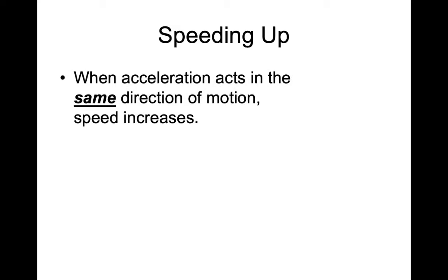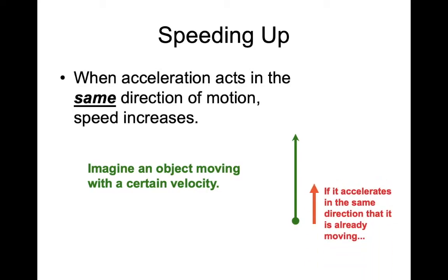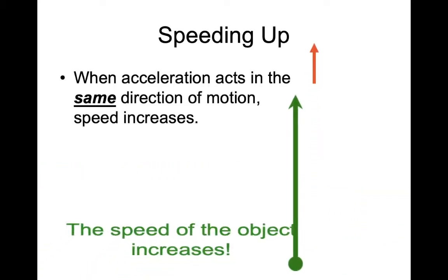So let's take a minute to consider what happens when an object speeds up. When acceleration is acting in the same direction of motion, the speed increases. Imagine for a moment an object that is moving at a certain velocity. Let's say this arrow, which is called a vector, represents your car and it's moving forward or upward on the screen as you look at it at a certain direction. If the vehicle accelerates in the same direction that it's already moving, well, of course, that means it's going to speed up, like you're passing something on the highway.